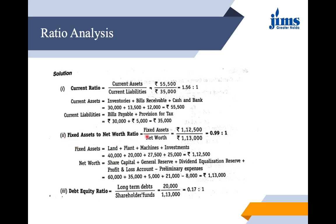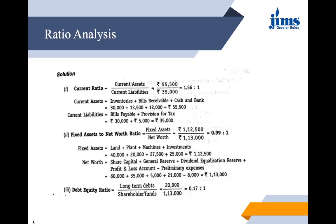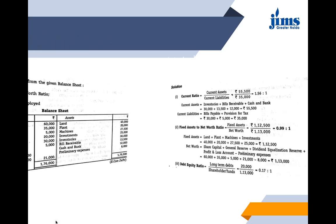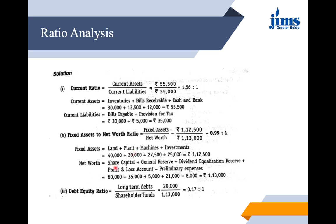Next is the fixed assets to net worth ratio = fixed assets / net worth. Fixed assets include land, plant, machines, and investments — all four amounts added together. Net worth is calculated by adding share capital, general reserve, dividend equalization reserve, and P&L account balance, then subtracting preliminary expenses. Many students forget to subtract preliminary expenses. After putting in the values, the ratio comes out as 0.99:1.